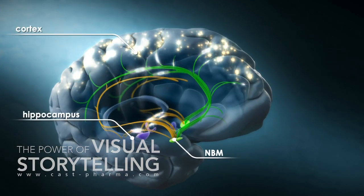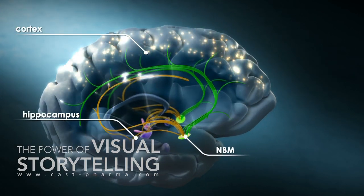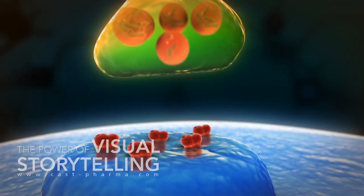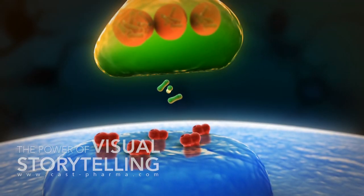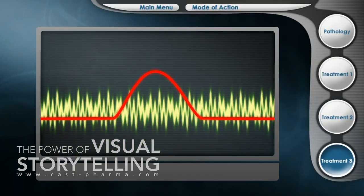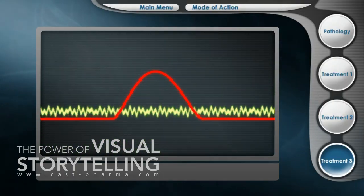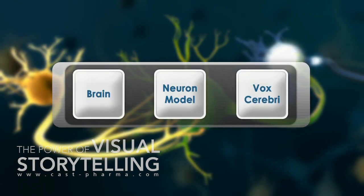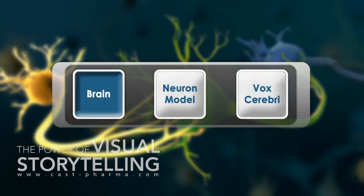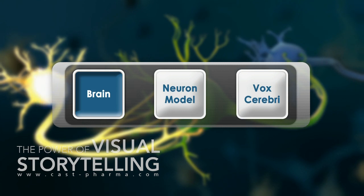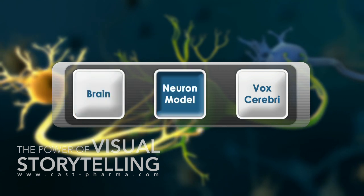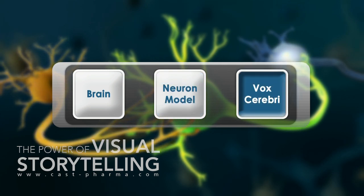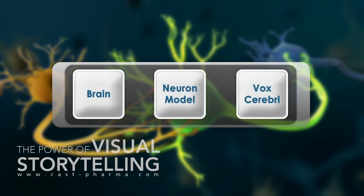Welcome to this interactive presentation on the drug treatment options for Alzheimer disease. Find out how drugs may modify the progressive degeneration of neurons and in this way may help maintain the patient's independence for longer. By choosing the relevant buttons of the menu, you can watch an animated overview of the development of Alzheimer disease, actively explore the effect of drugs from two different classes, and experience an audio-visual representation of the disease.